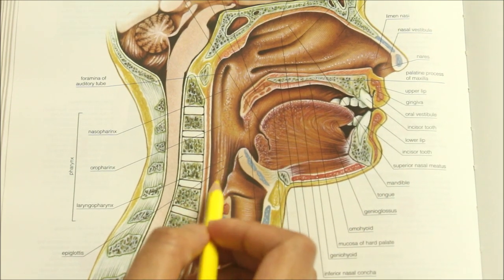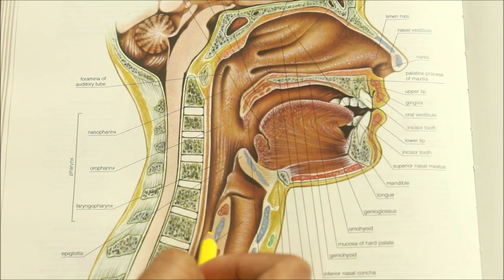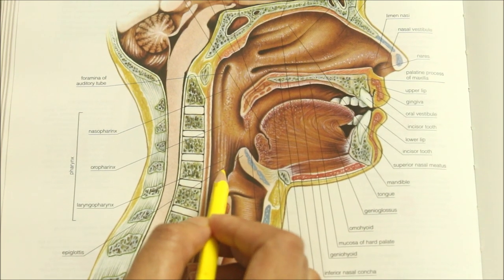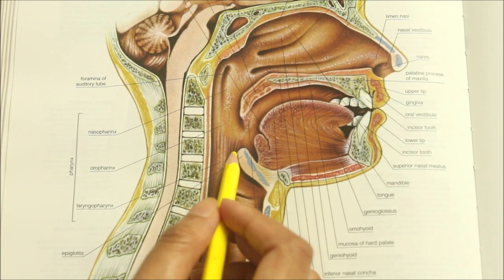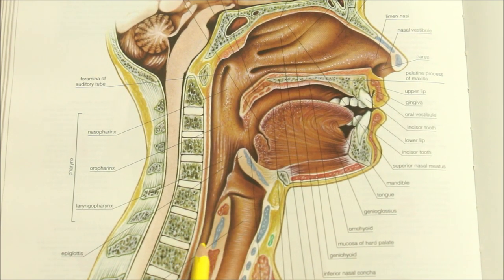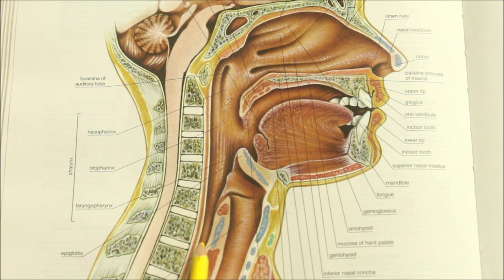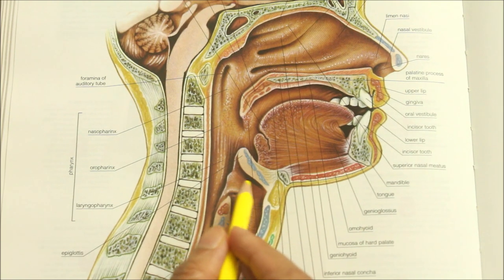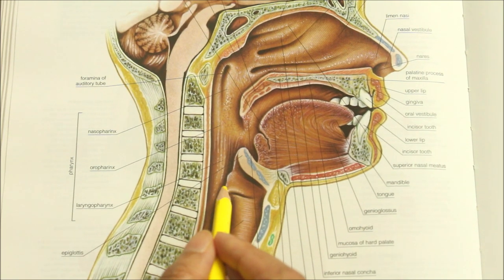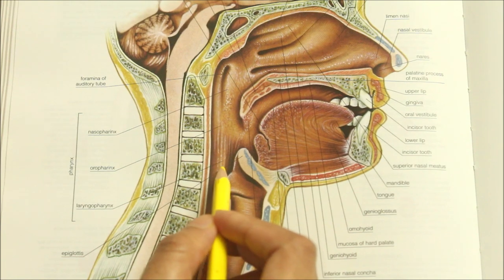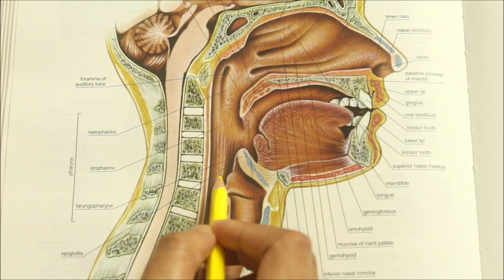Now let's learn about the laryngopharynx. It is situated behind the larynx. It extends from the upper border of the epiglottis to the lower border of the cricoid cartilage. It communicates inferiorly with the esophagus, anteriorly with the larynx and above with the oropharynx. Its nerve supply is by the 9th and 10th cranial nerves.